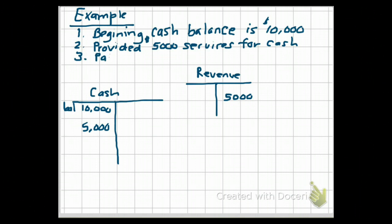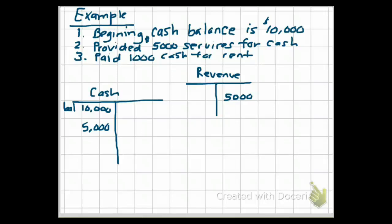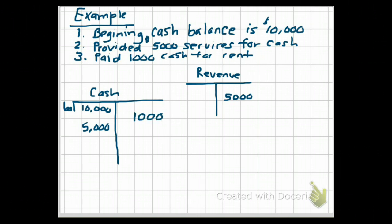The next transaction is that we paid $1,000 cash for rent. Since it's a transaction, it affects at least two accounts. We paid cash, so cash is one of the accounts affected. We need to figure out: did our cash go up or down? Cash went down because we paid money out of the business. The accounting rules say that a reduction goes on the opposite side of the normal balance. The normal balance of cash is a debit, but our balance went down, so we put it on the credit side of the cash account.